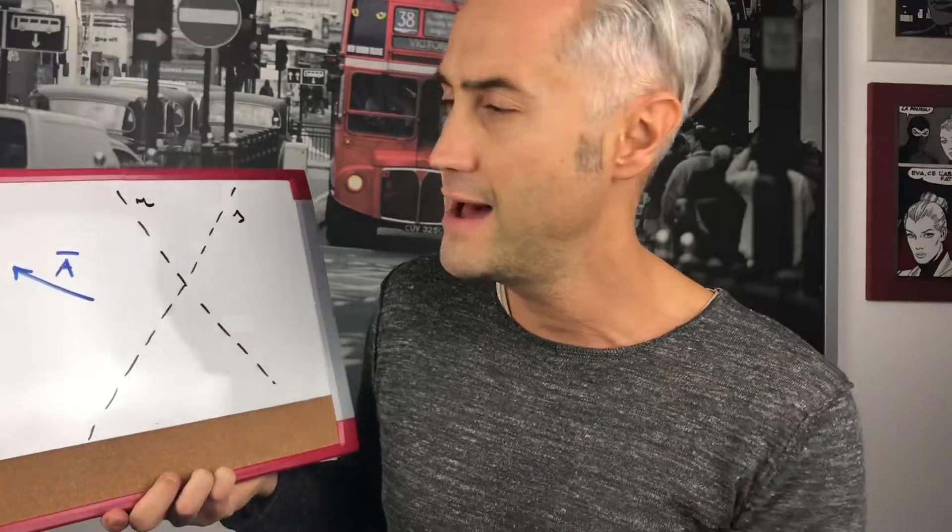The second one is the parallelogram method, which will be very useful today. Using the parallelogram method in reverse gives you the vector decomposition method. Let's figure out how to decompose a vector. Here we have a vector and two directions, R and S.